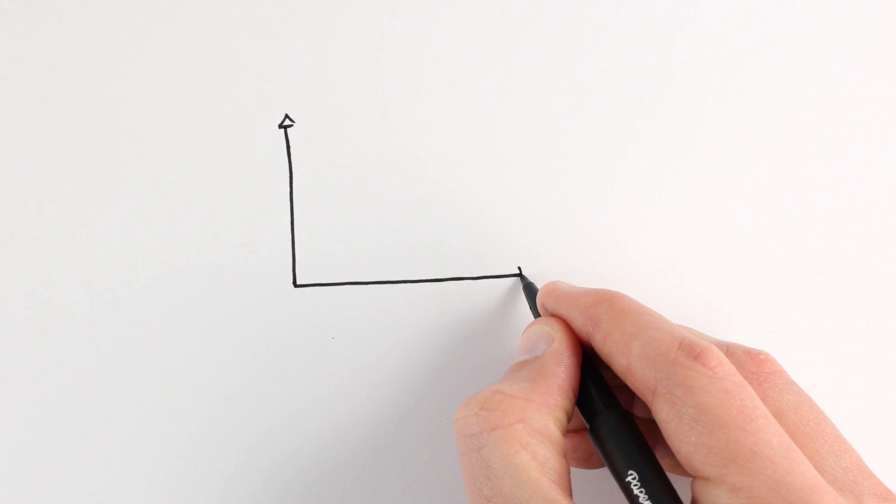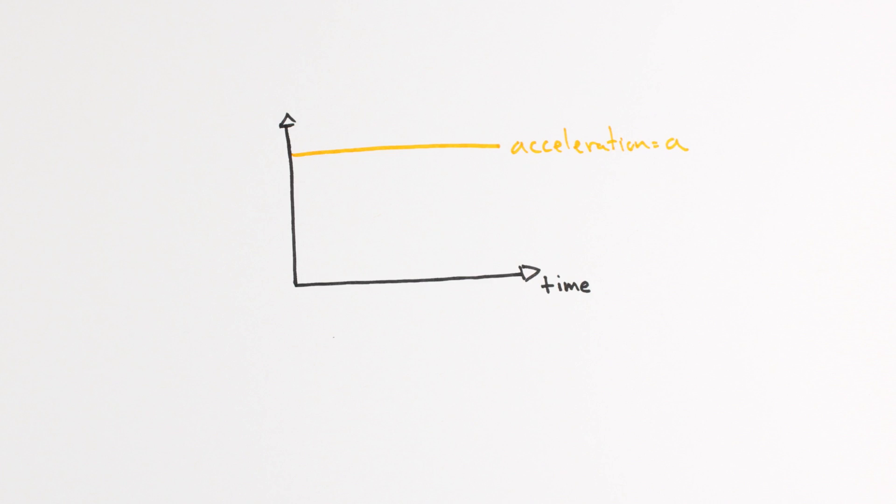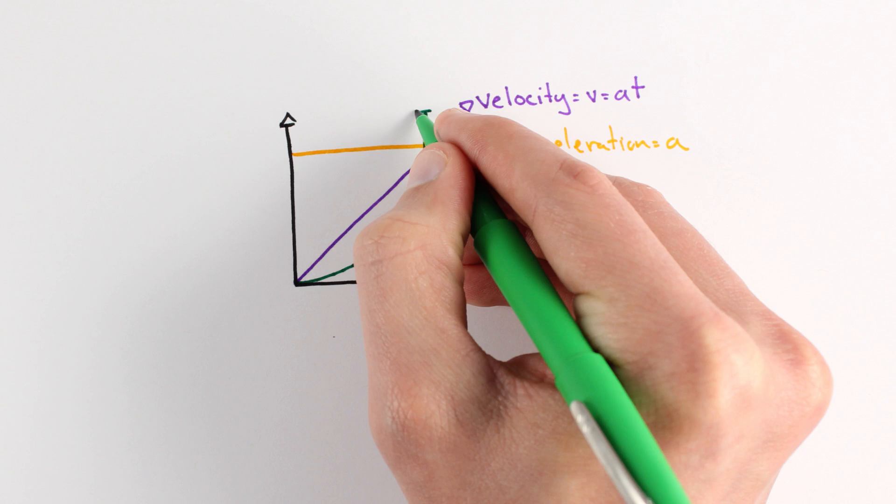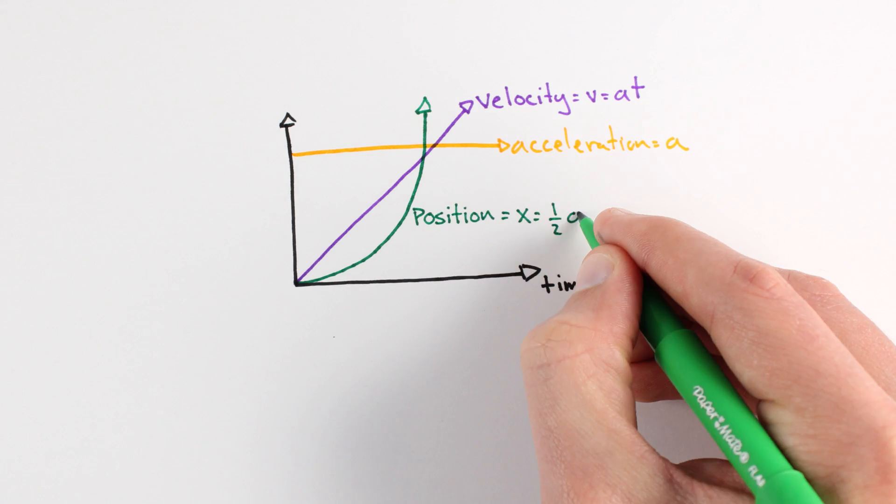We know that position and acceleration are connected somehow, because if I want to move something, accelerating it is a great place to start. However, accelerating an object does not immediately change its position. Instead, it changes its velocity, which in turn changes its position.